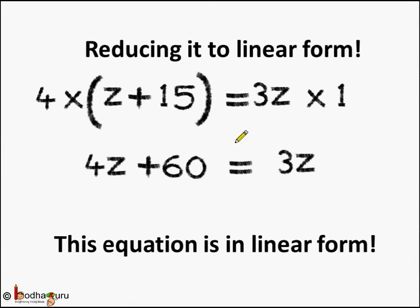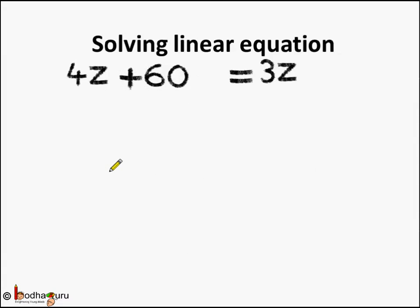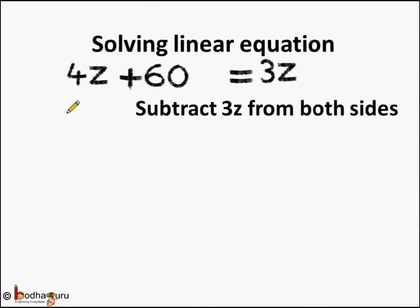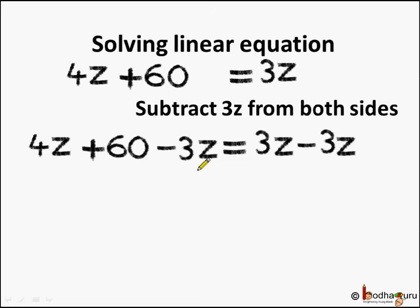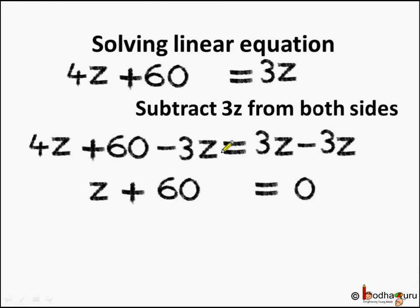Now this equation is in linear form because z has only the power equal to 1. Let's solve it since we already know how to solve a linear equation. We have 4z plus 60 is equal to 3z. We subtract 3z from both sides to bring the variable to one side. So 4z plus 60 minus 3z equals 3z minus 3z, giving us z plus 60 equals 0.